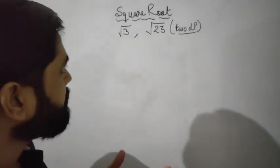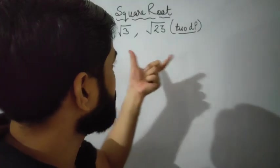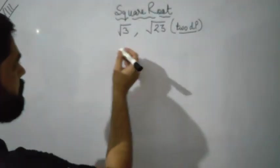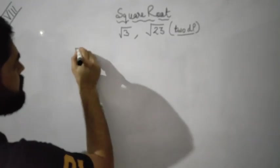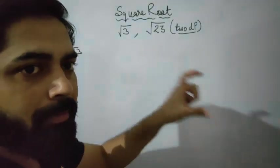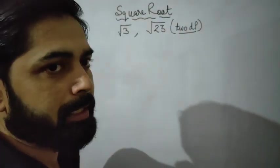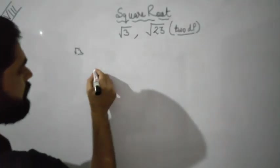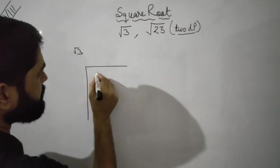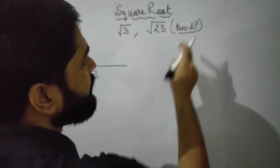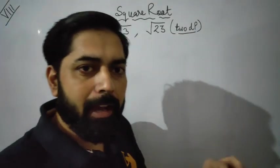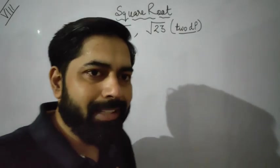Let's learn how to find the square root of under root 3. You know how we can find the square root by the long division method. We need the answer up to 2 decimal places.